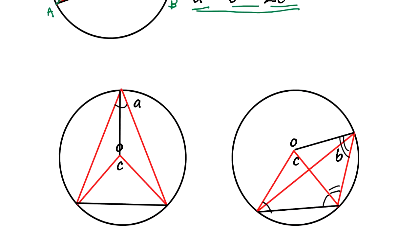Now, when O is inside the triangle, we add a line like this. And we know this line is equal to this line. It's a radius.